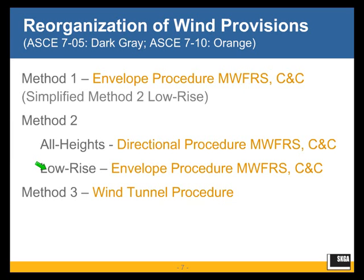ASCE 7-05, as all of you know by now, has three so-called methods of wind design. Method 1 is called simplified design. Method 2 is the analytical procedure. Method 3 is design based on wind tunnel testing.